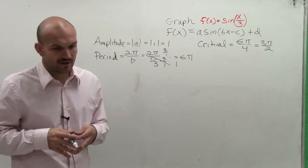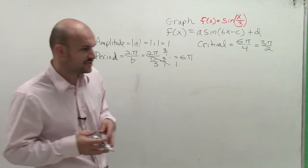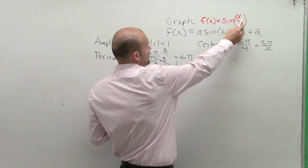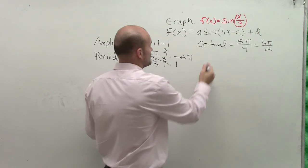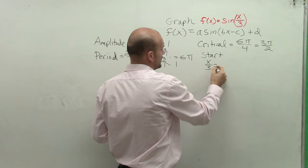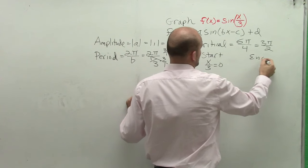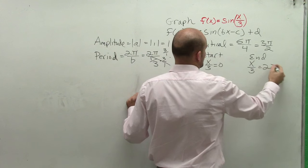And then the next thing I want to do is I want to find the start and the end of my graph if there's any kind of phase shift. So what we do is we always take what's inside our function and set it equal to 0 and set it equal to 2 pi. So the start of how I'm going to graph is going to be x divided by 3 equals 0. And the end of where my graph is going to be is going to be x over 3 equals 2 pi.